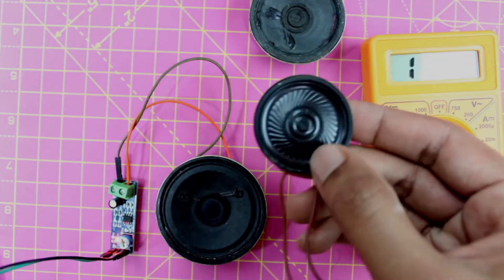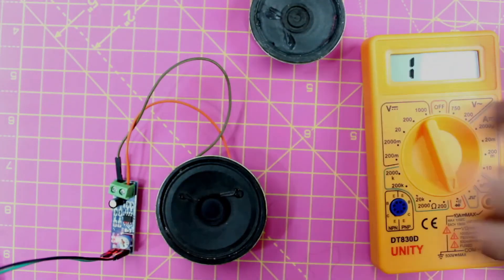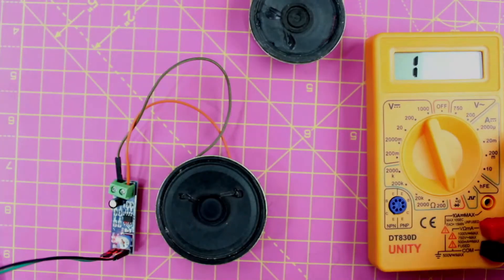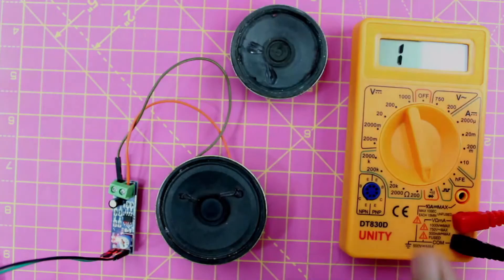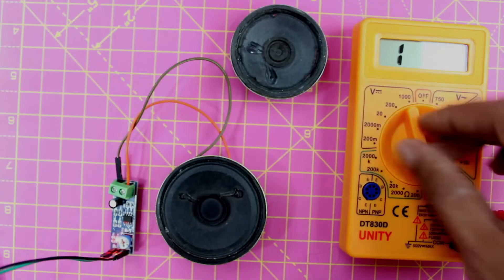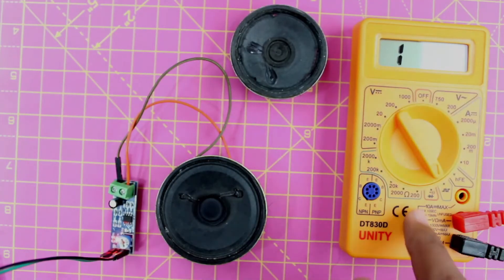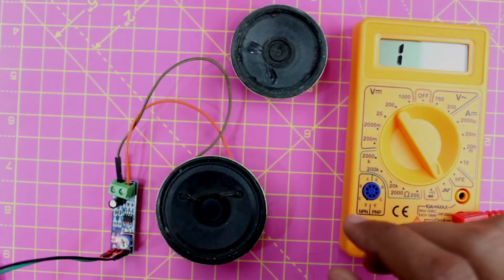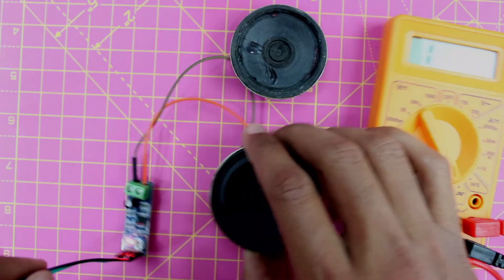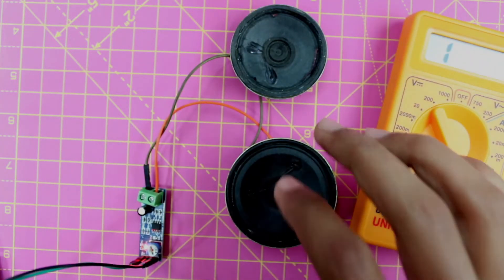The second method is to use the square wave function of your multimeter. Not many people are aware of it, but this square wave can be used to check if your speaker's working or not—it acts as an audio source.